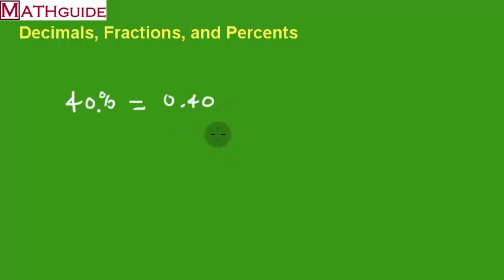Now remember, percent does mean per 100. So this means 40 per 100. Of course, that is now written as a fraction, except we could reduce this fraction. I could divide the top by 4. I could divide the bottom by 4. I could even divide the top again by 5. I could divide the bottom by 5. And I get 2 fifths. So 40 percent is 0.40 is equal to 2 fifths.